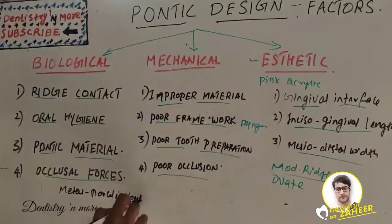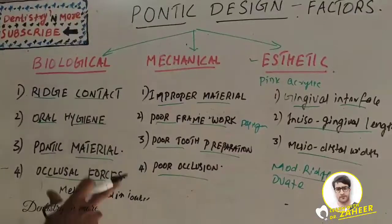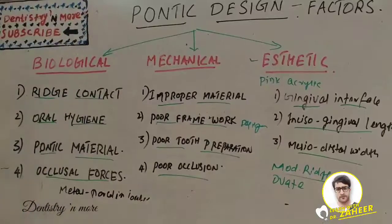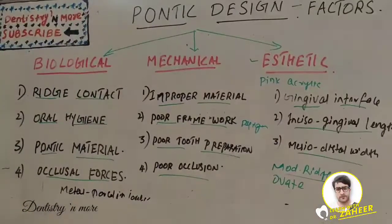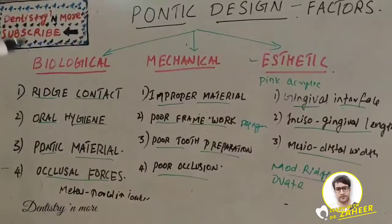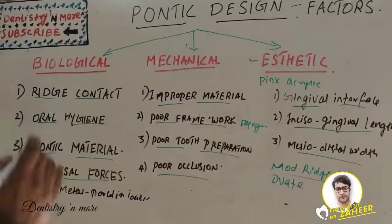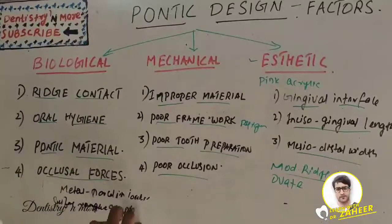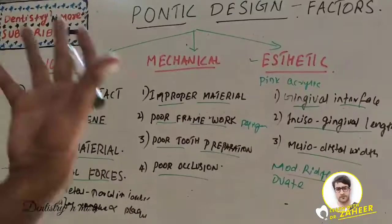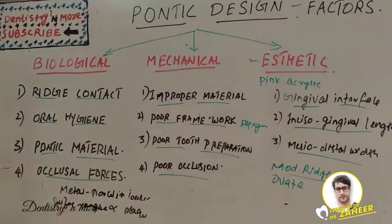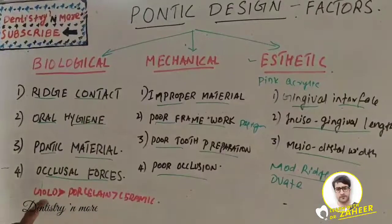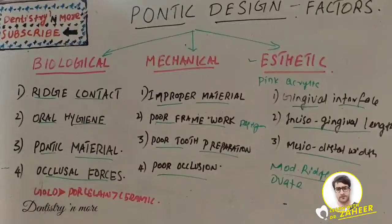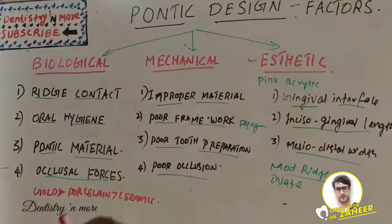Occlusal contacts should not occur at metal-porcelain junctions, as there is a high chance of fracture at that junction. The pontic material should also have the ability to resist plaque accumulation, since surface roughness is directly proportional to plaque accumulation. The most ideal material is gold, then glazed porcelain and ceramic, as they have the most polished surfaces and therefore accumulate less plaque.